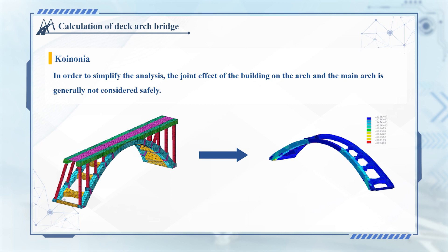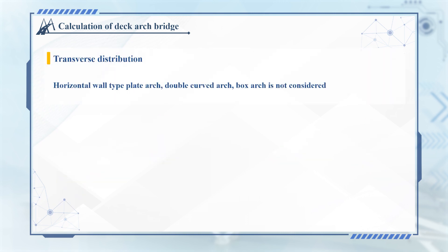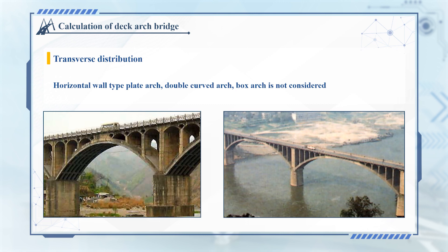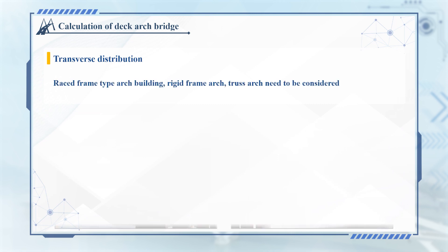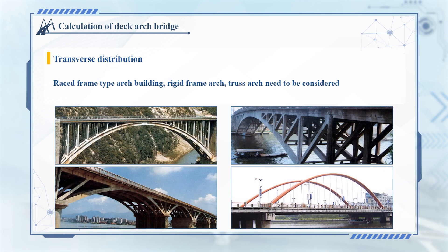In the transverse direction of the bridge, whether the lever load acts on the center of the bridge deck or not, there will be uneven stress distribution on the cross-section. When the building on the arch is bent, the transverse non-uniform distribution of lever load should be considered. This effect is generally not considered for hyperbolic arch and box arch, but should be considered for rigid frame arch and spandrel arch.